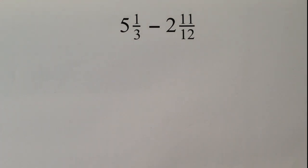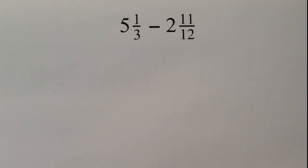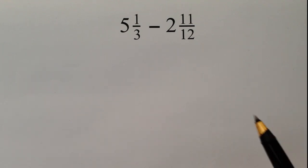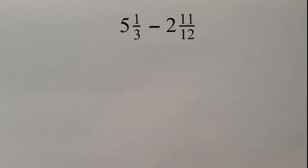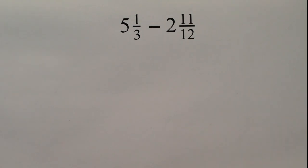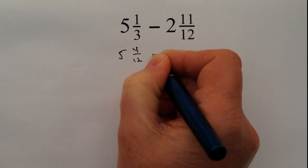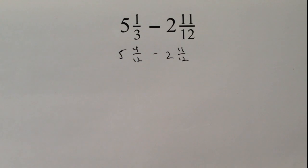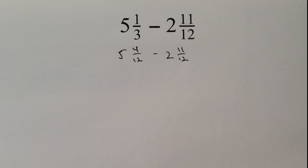The first thing is we need to make sure that the denominators, in other words these two numbers, are the same. The easiest way with these particular fractions is to make them something over 12. So 11 over 12 I can keep the same, but because 3 will divide into 12 four times, I can rewrite that fraction as 5 and 4 over 12, and I'm going to write minus 2 and 11 over 12. So what I've basically done is said 4 over 12 is the equivalent of 1 third.